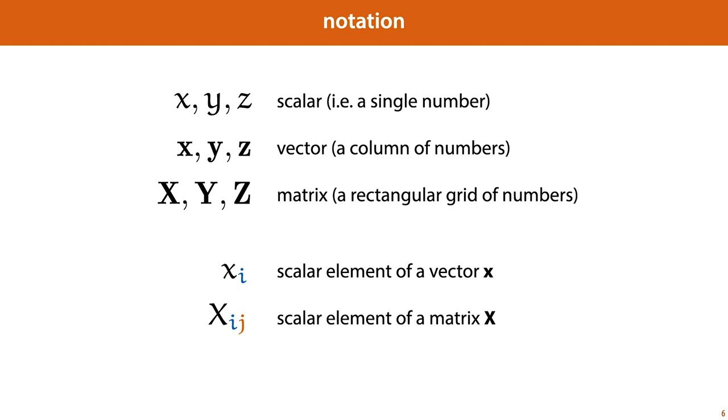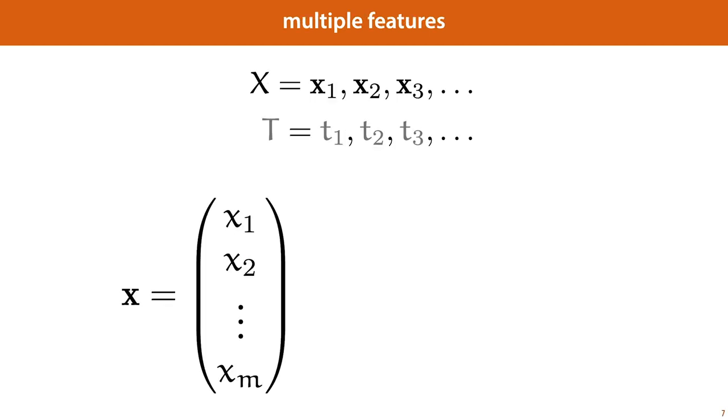So in this notation, we can very neatly express our dataset for a regression task in the following way. We have a list of instances. And each instance consists of a number of features, a fixed number for the whole dataset, in this case m. So each of these instances we can represent by a vector. And all the elements of the vector represent our m measurements of this particular instance. And the target value t can simply be represented as a sequence of scalar values.